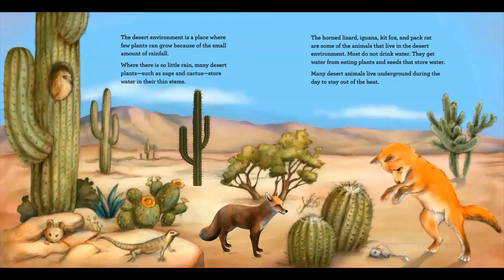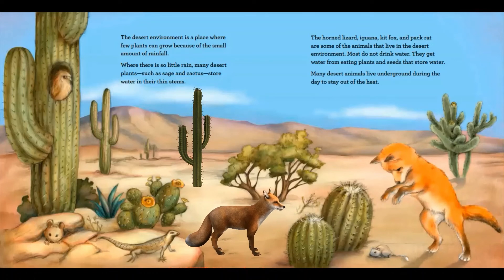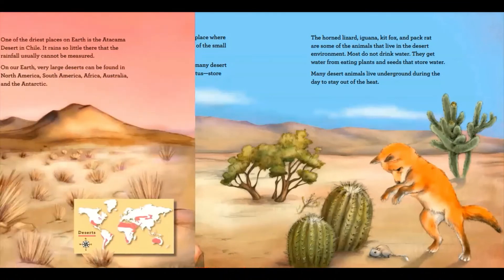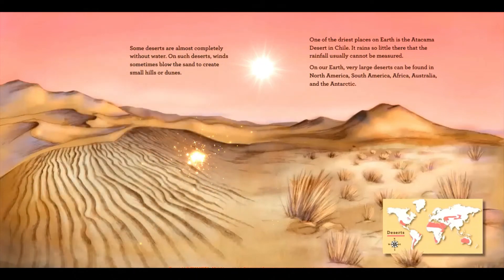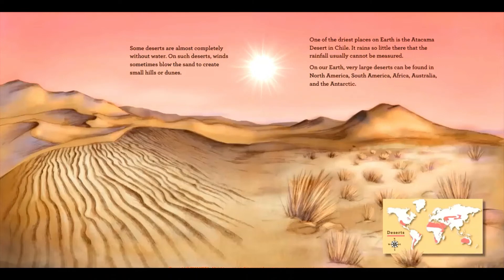Most desert animals do not drink water. They get water from eating plants and seeds that store water. Many desert animals live underground during the day to stay out of the heat. Some deserts are almost completely without water. On such deserts, winds sometimes blow the sand to create small hills or dunes. One of the driest places on earth is the Atacama Desert in Chile. It rains so little there that the rainfall usually cannot be measured. On our earth, very large deserts can be found in North America, South America, Africa, Australia, and the Antarctic.